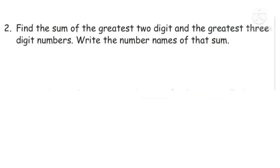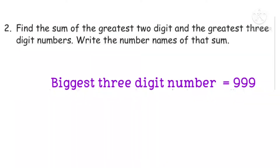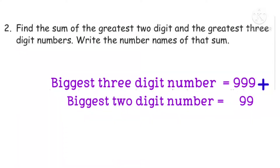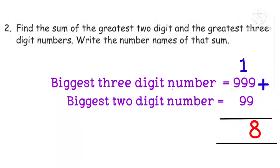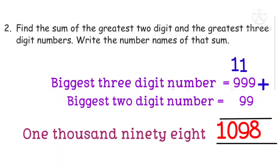Let us see the second question: Find the sum of the greatest two-digit and the greatest three-digit numbers, then write the number name of that sum. We take the greatest three-digit number, 999, and the greatest two-digit number, 99, and add them. In ones place: 9 plus 9 equals 18, write 8 and carry 1. Then 1 plus 9 plus 9 equals 19, write 9 and carry 1. Then 1 plus 9 equals 10. The answer is 1,098. Now we write the number name of 1,098.